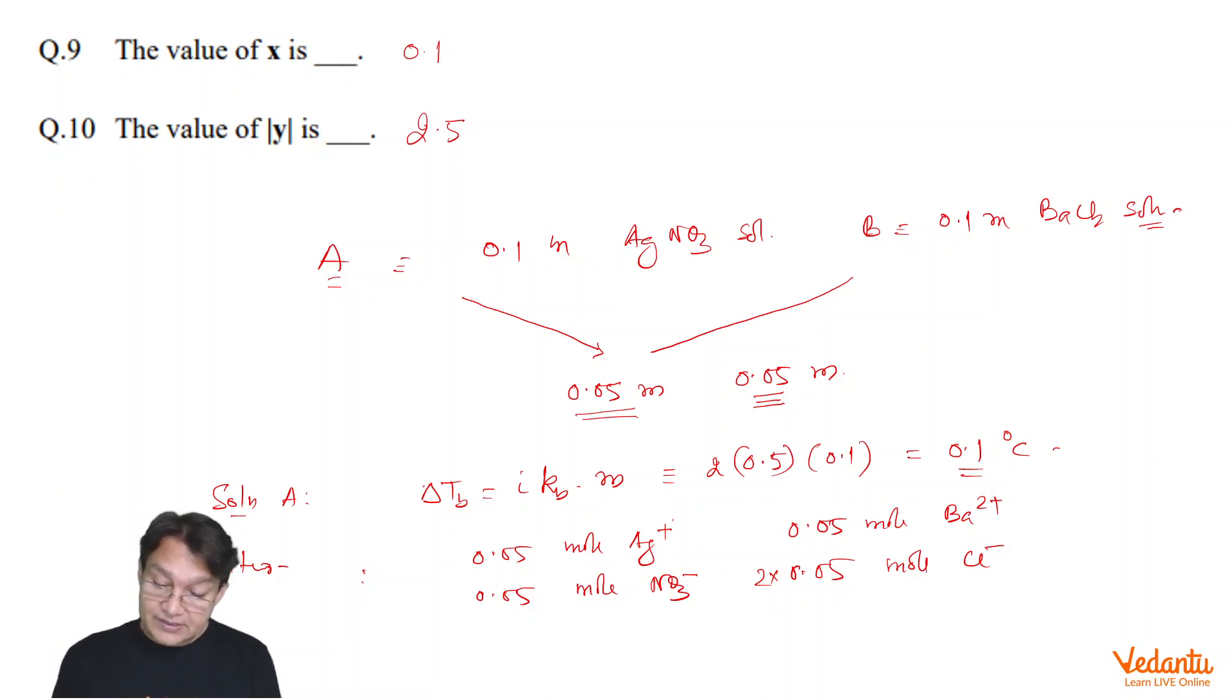But, obviously, Ag plus and Cl negative is going to react. Cl negative is twice of Ag plus. So, that is going to be completely neutralized. So, after this reaction, we are going to get what?